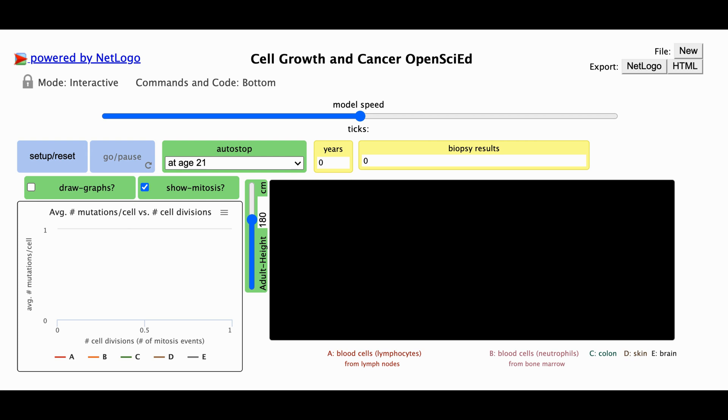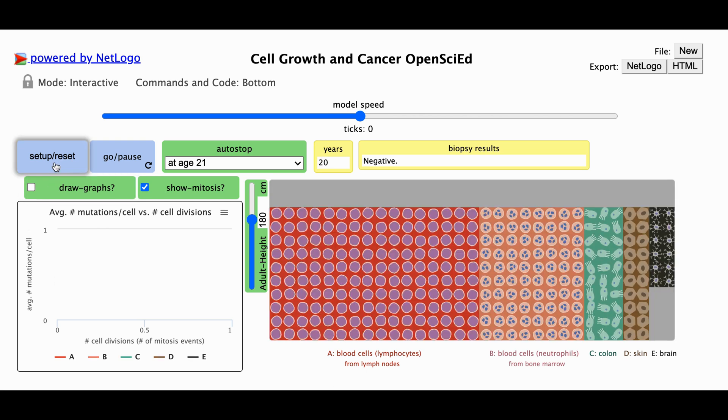To start, you'll need to click the Setup Reset button, which will cause some different types of cells to appear on the screen. Take some time to make observations about the different cell types and how they're represented. You'll have a spot in your notebook to keep track of everything you notice and wonder.